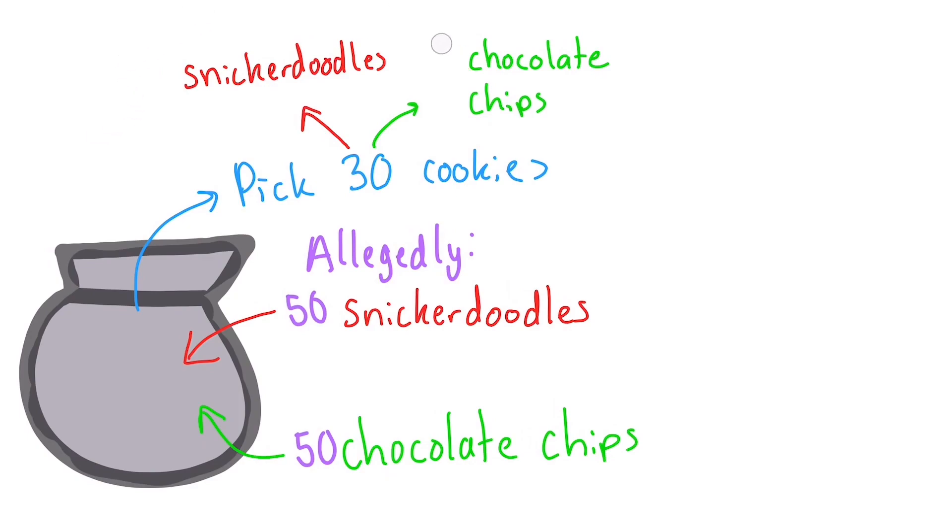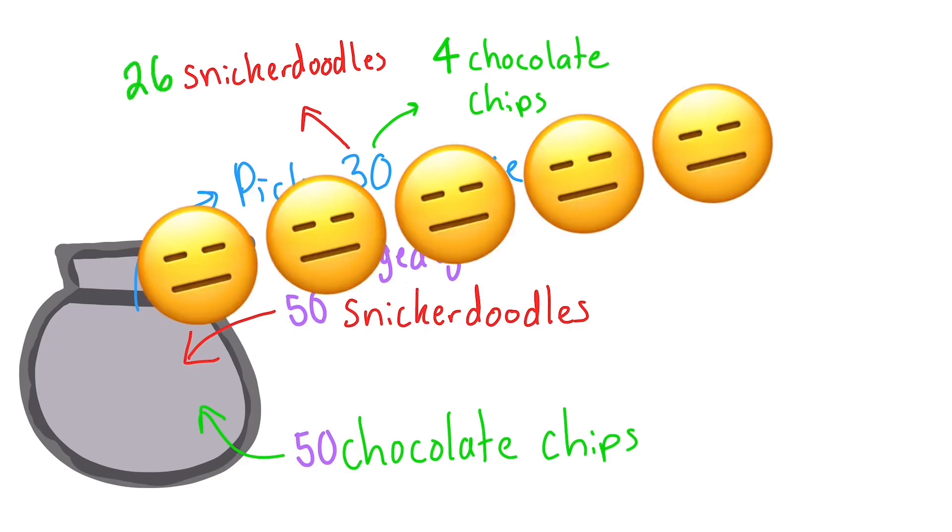Now, what if I had my friends do this same exercise, but instead of 12 chocolate chip cookies, they only got 4? We'd be real suspicious then, right? Let's see what the math says.